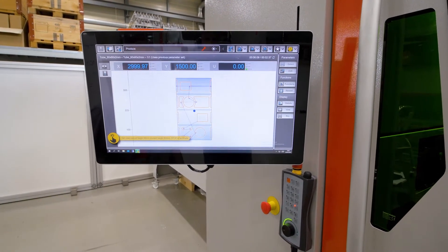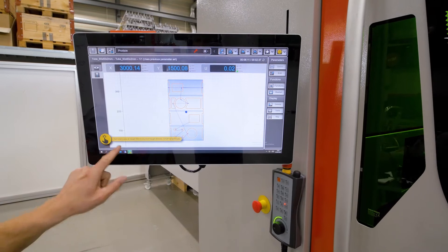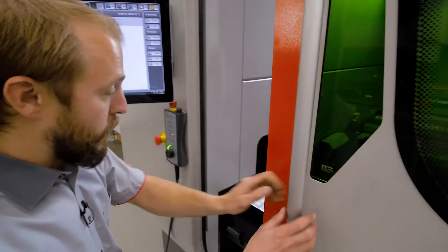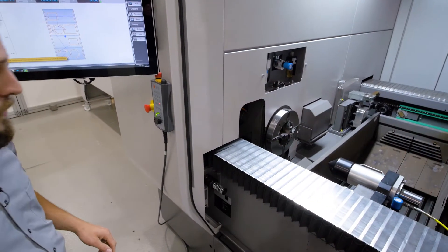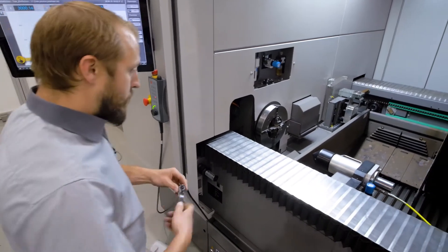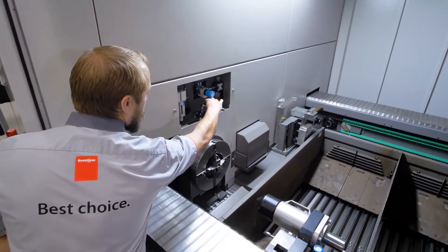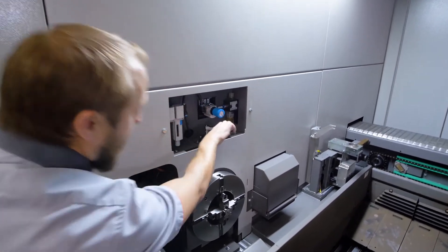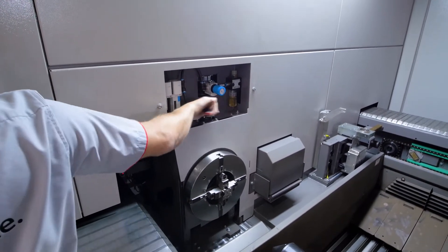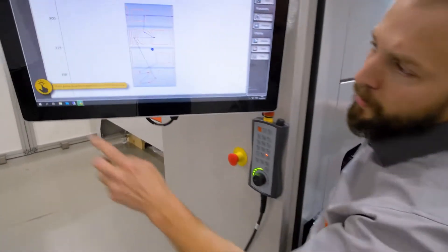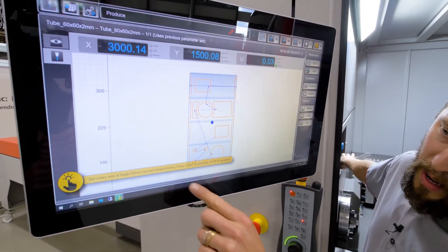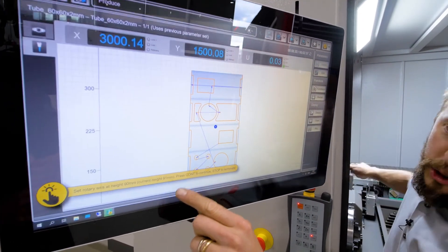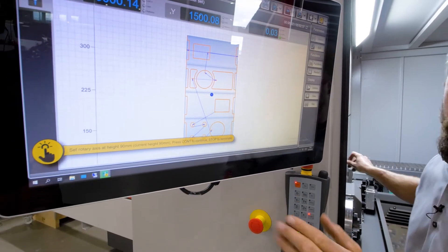First we have to raise the rotary axis to the position. In order to do that, we are moving here. As you can see, this is coming up. On the screen, I can see where I am, the current position and where I have to go. Now we are set.